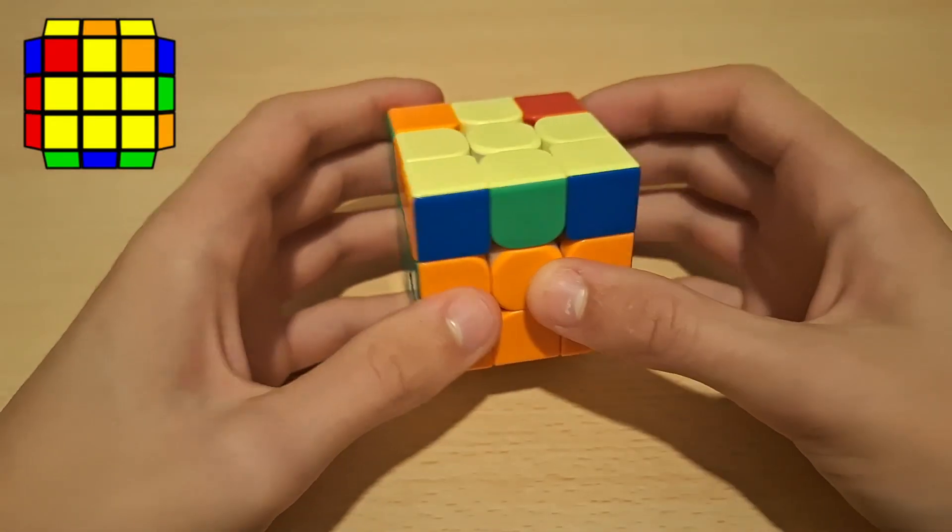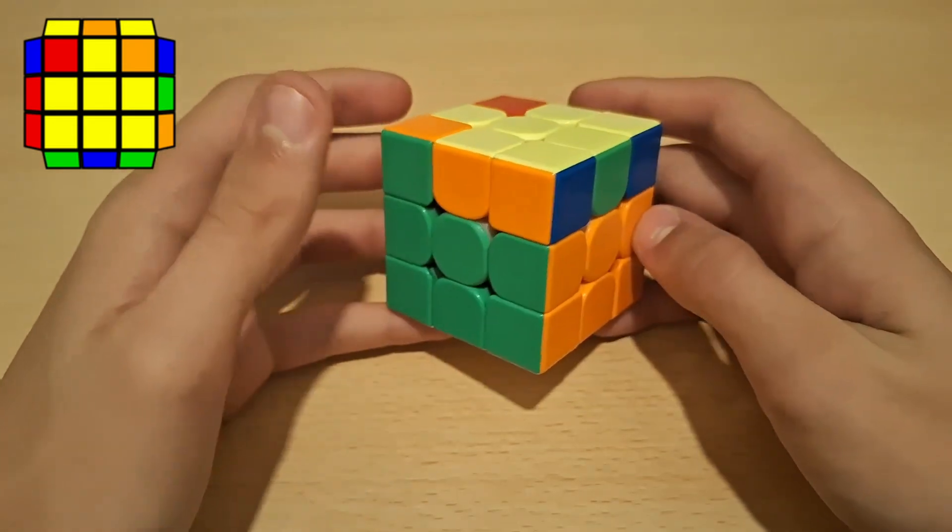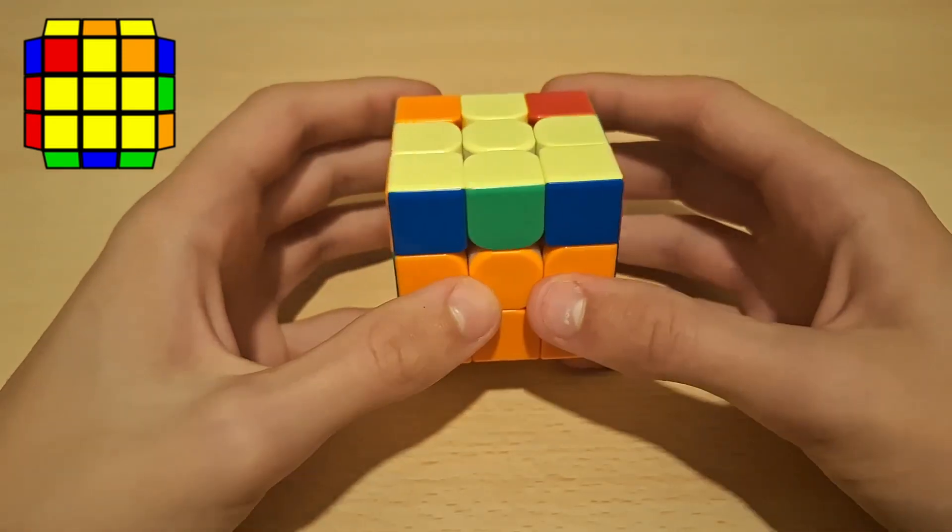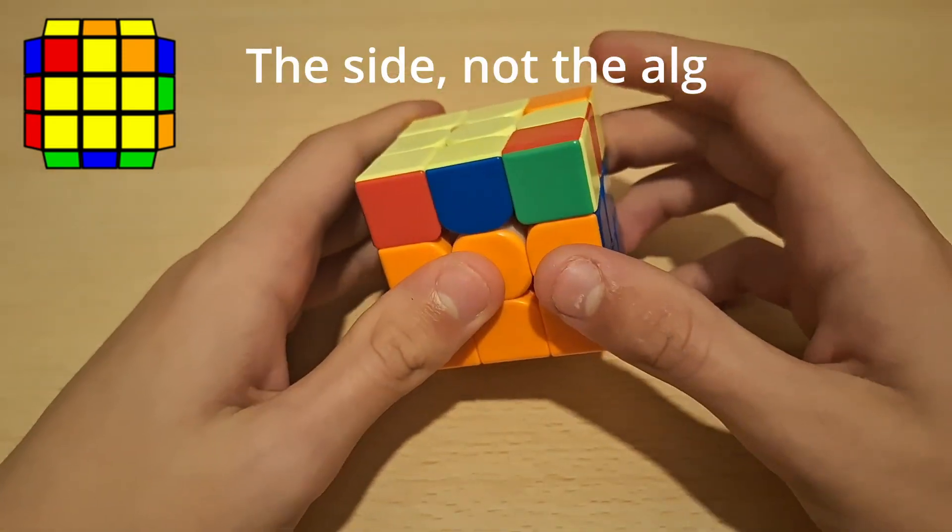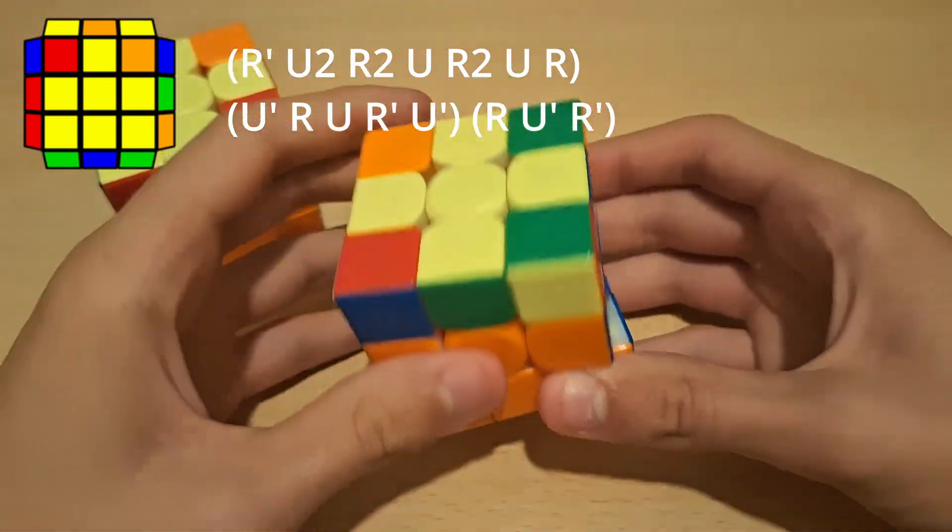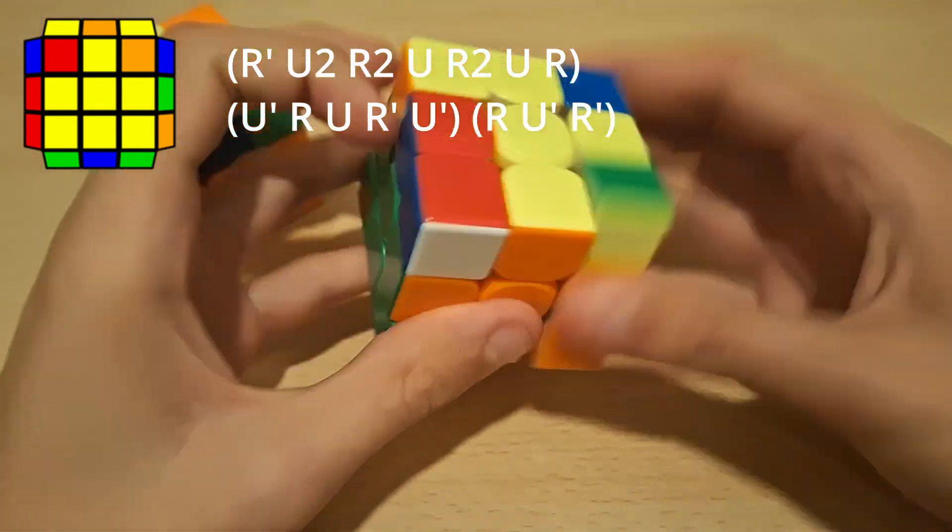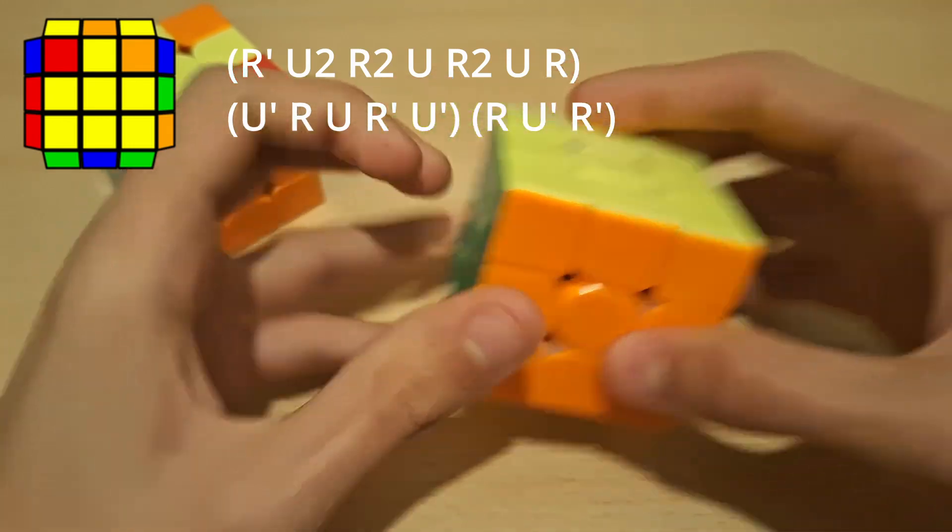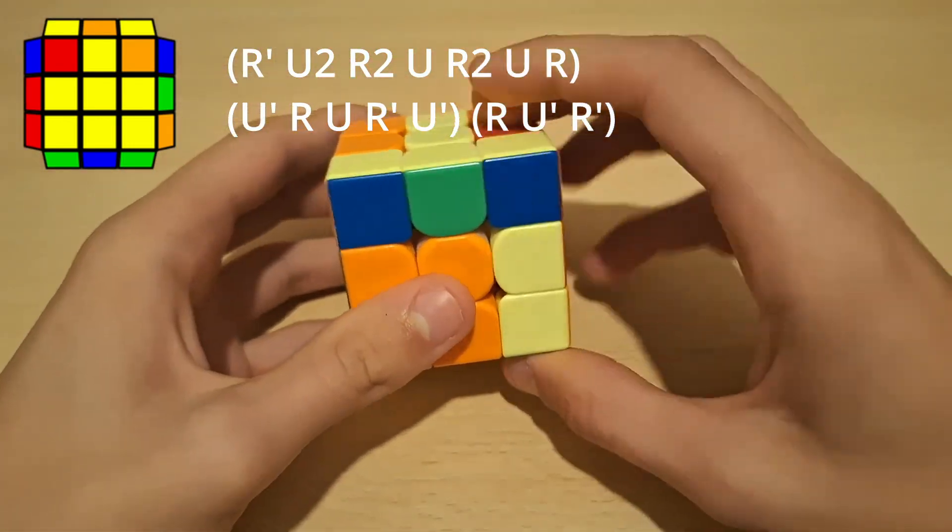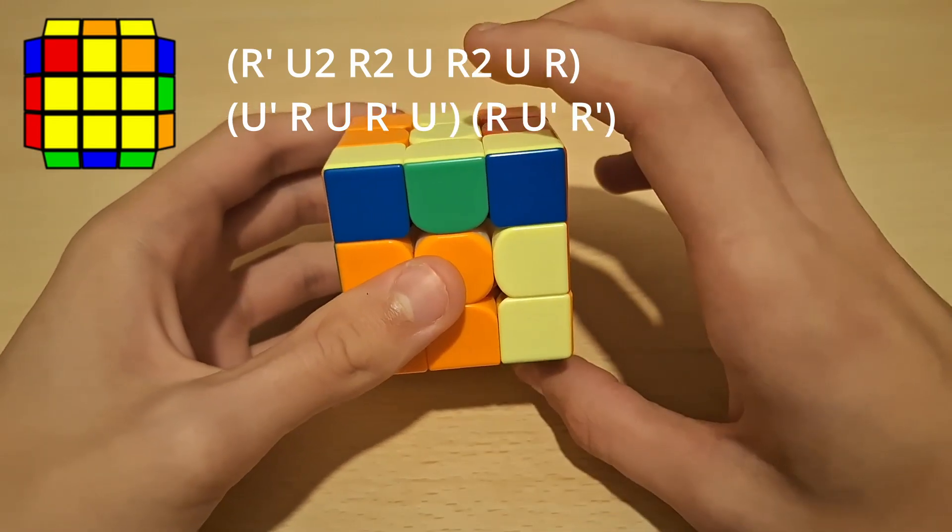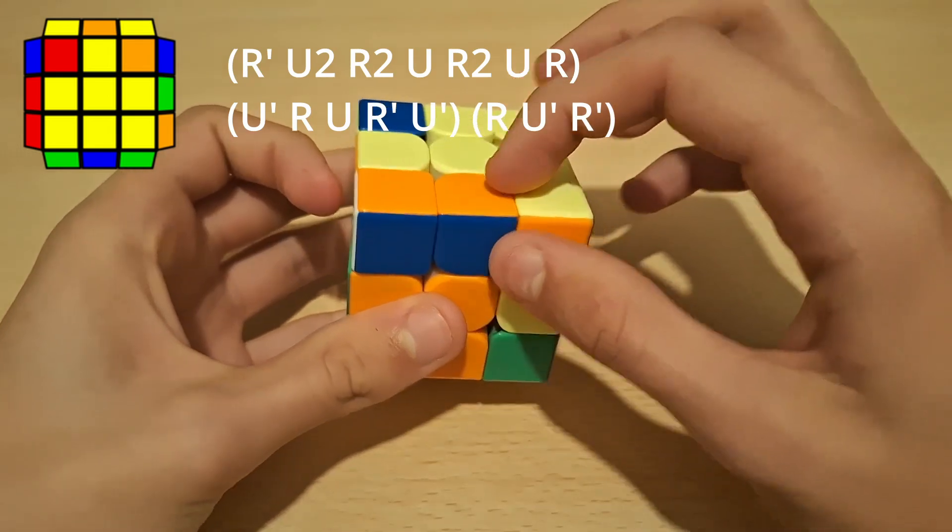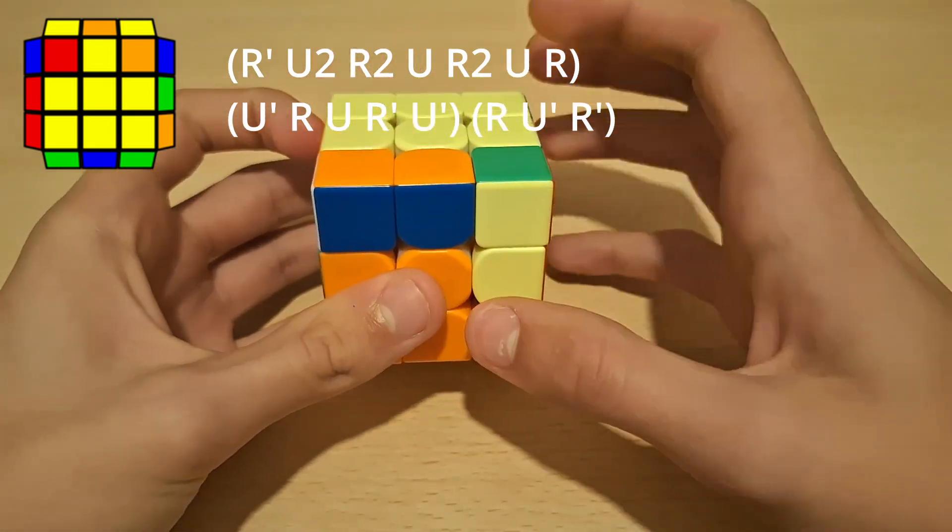Alright so for the next ZBLL this is pretty much a T-perm but this time you recognize it from this angle. And this is executed from the back. So from this angle you do pretty much this OLL but from the back which will look like this. So like this. And then here again you don't do an R2. So you just do an R, then U' to bring this pair over here. Sexy and then insert.